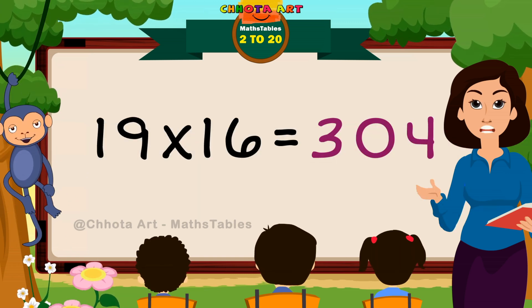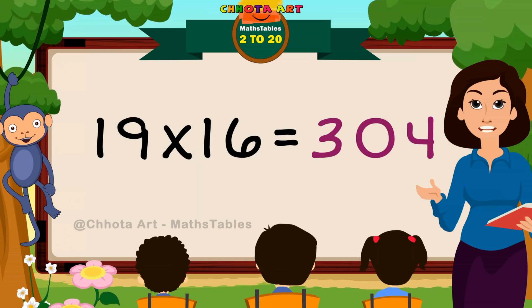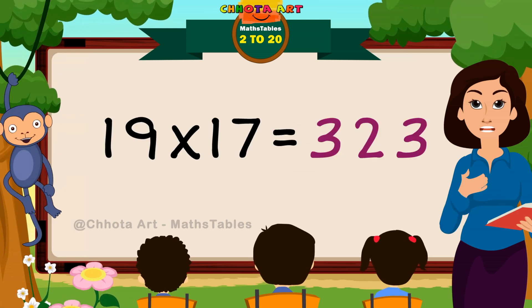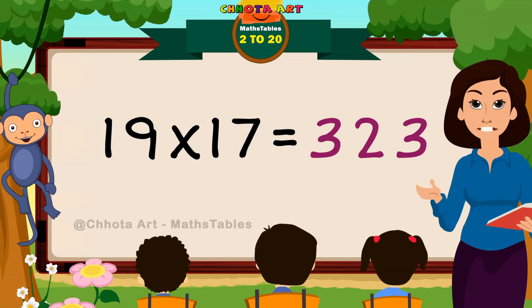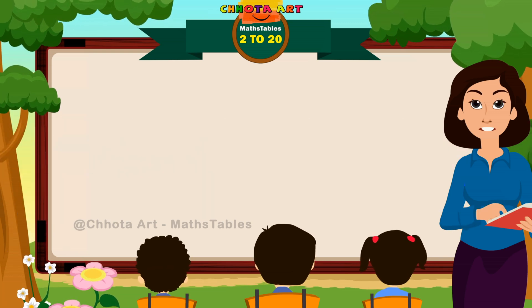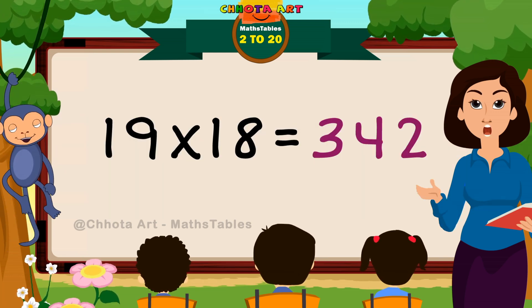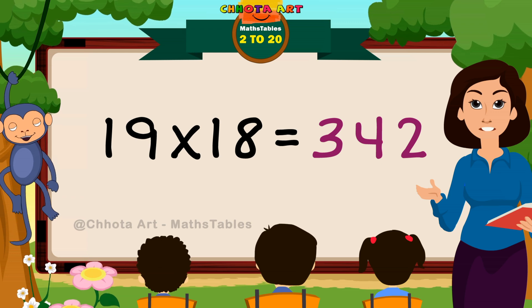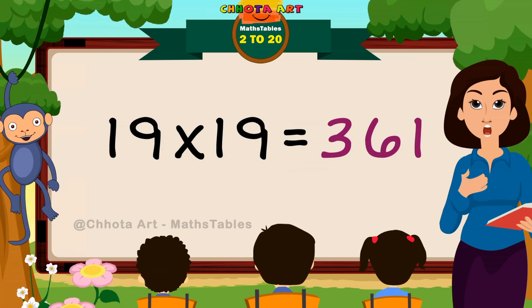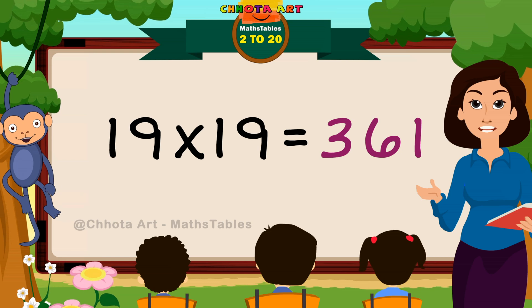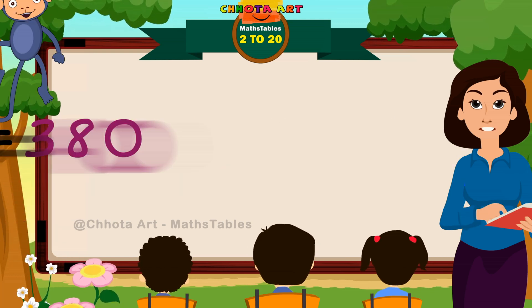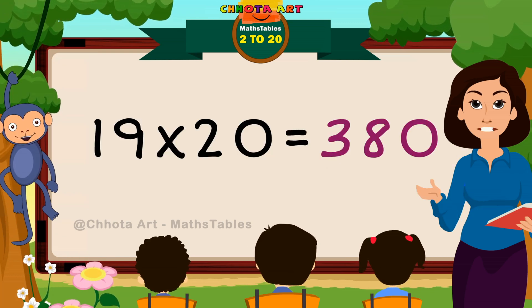19 times 16 is 304. 19 times 17 is 323. 19 times 18 is 342. 19 times 19 is 361. 19 times 20 is 380.